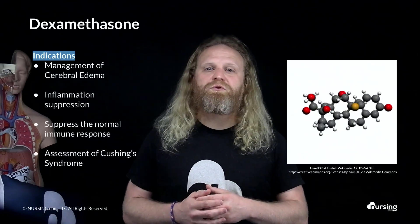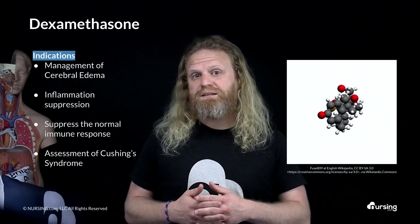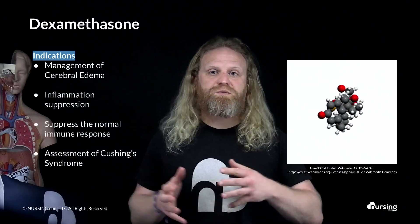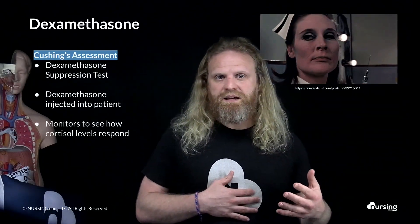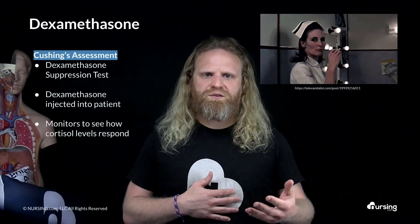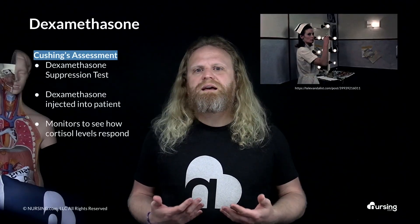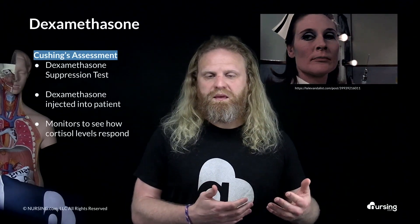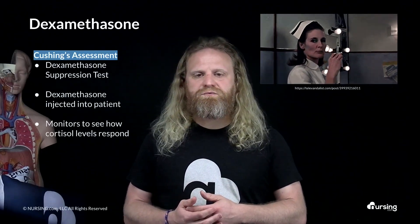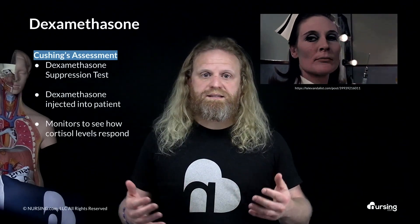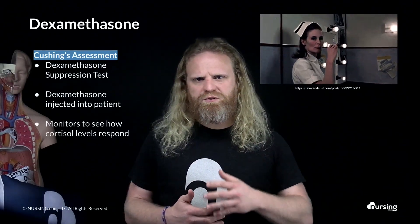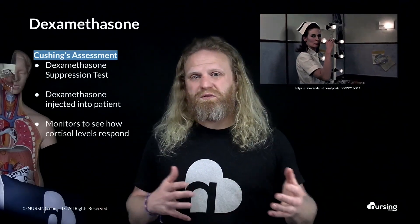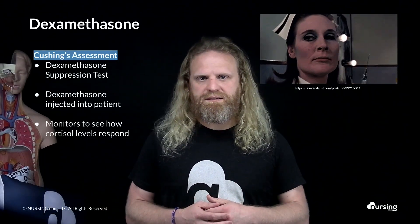One of the things it can be given for is to assess for Cushing's disease. What's done is called a dexamethasone suppression test. A certain amount of dexamethasone is injected into the patient, and then they assess cortisol levels. Depending on how cortisol levels respond to this injection, it can help the provider determine if the patient actually has Cushing's disease.